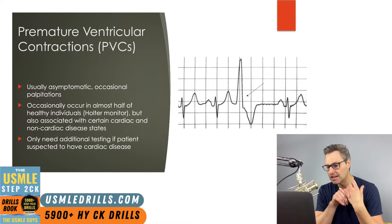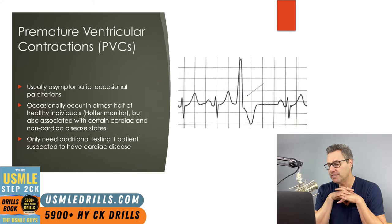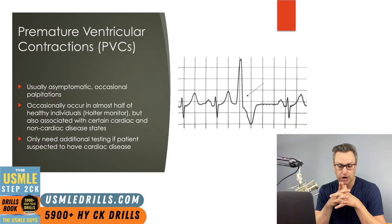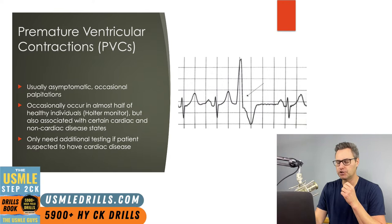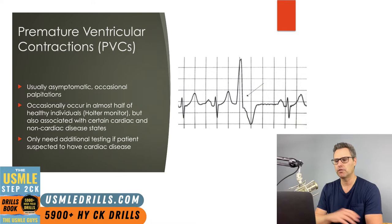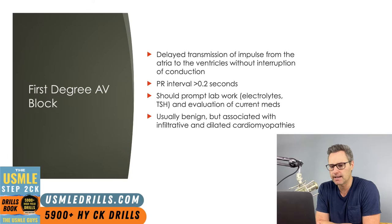You will only work up those who have a risk of cardiac disease. Testing options range from ambulatory ECG monitoring and lab studies to echo and exercise stress tests. Mostly just recognize what a PVC looks like on ECG — they're very common in clinical practice — and then move on.